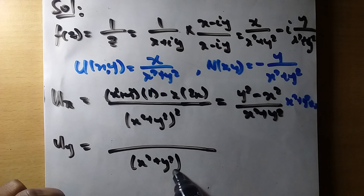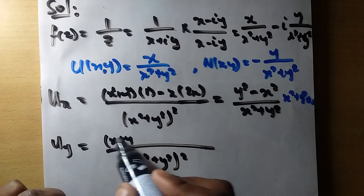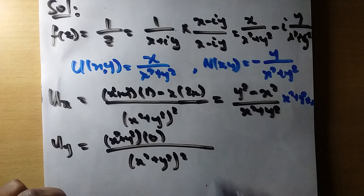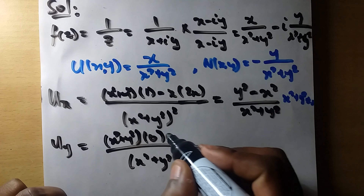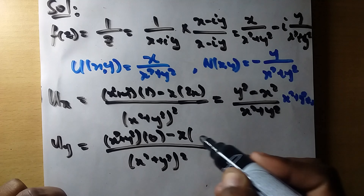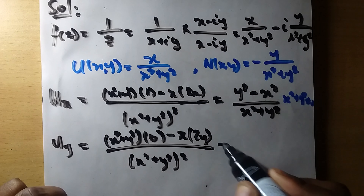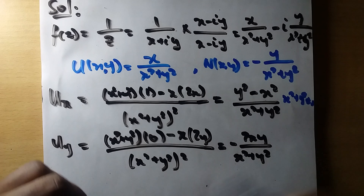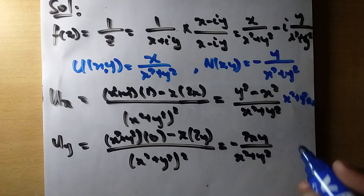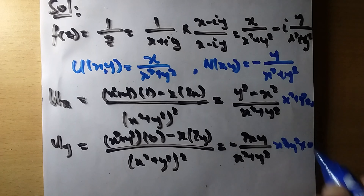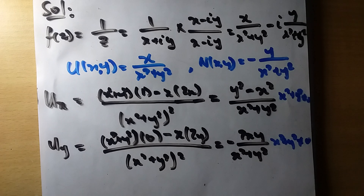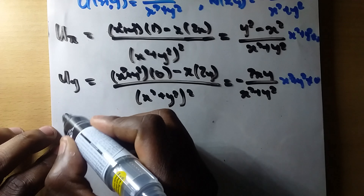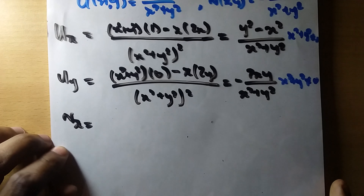Now let us find u_y. The denominator is again (x² + y²)². The derivative of the numerator x with respect to y is zero, minus x times the derivative of (x² + y²) with respect to y, which is 2y. So u_y equals negative 2xy over (x² + y²)², with the same condition that x² + y² ≠ 0.